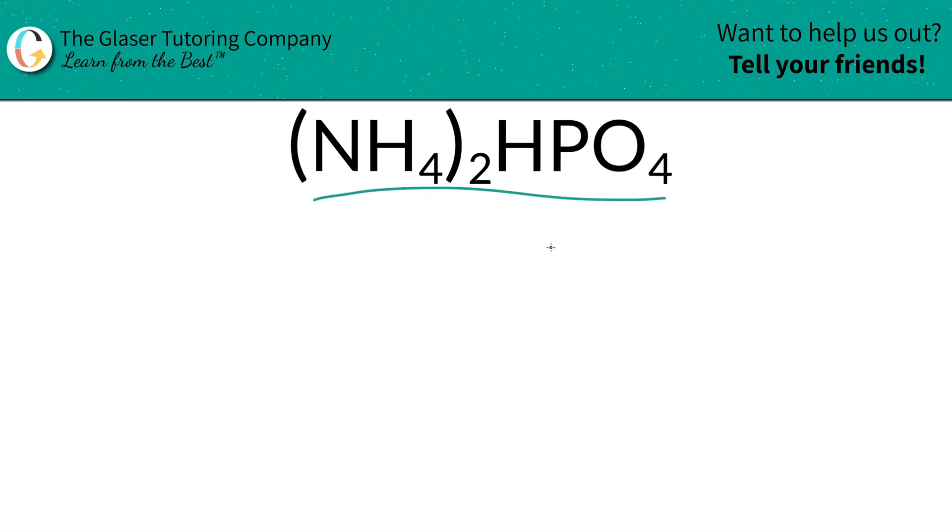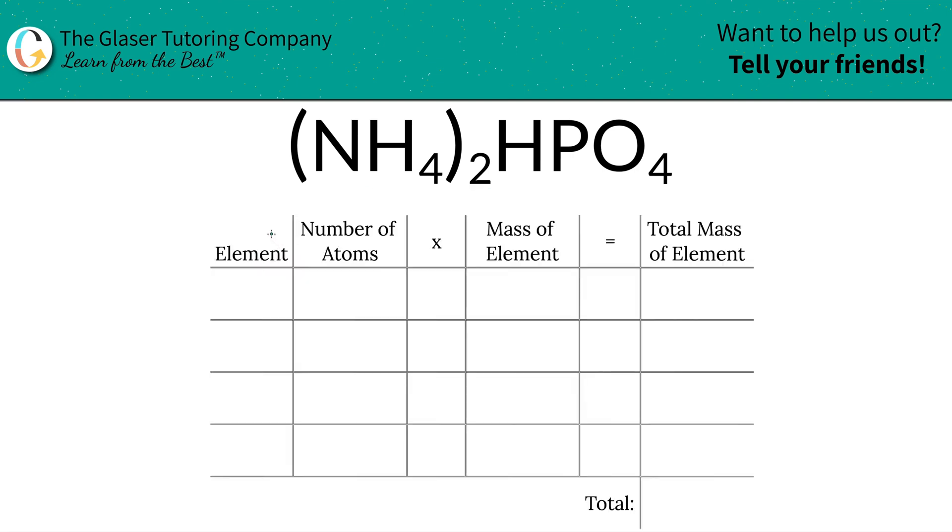It's a fairly straightforward process with the following table I made. Take a look. So the first thing I'm going to do is write down the individual elements I see in the compound. We've got nitrogen, hydrogen, phosphorus, and oxygen.